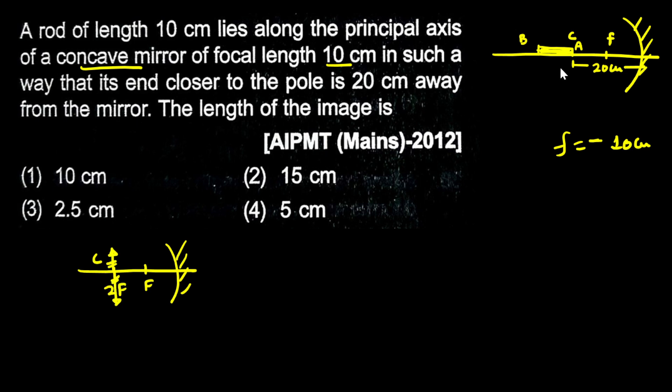Point A is at the center of curvature. Since the rod is 10 cm long, this is 20 cm and this is 10 cm more, so point B is at a distance of 30 cm from the mirror.